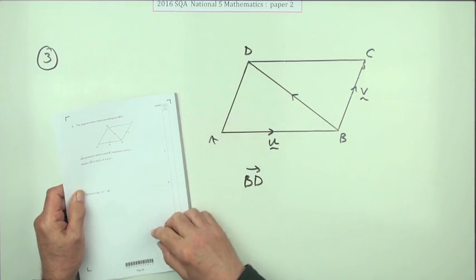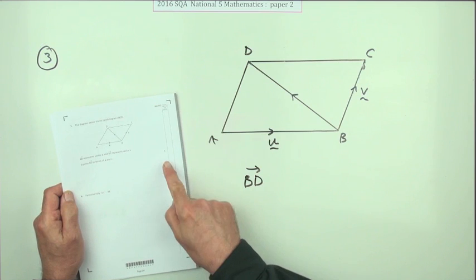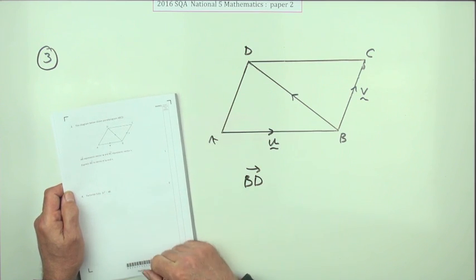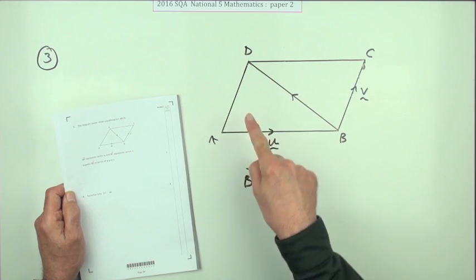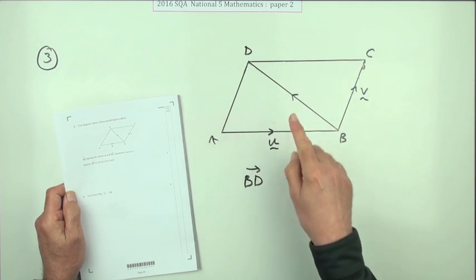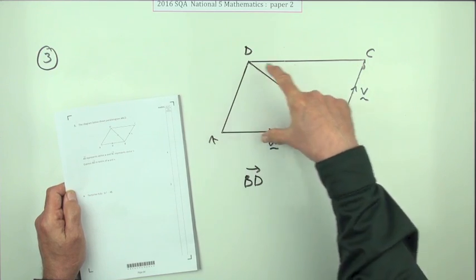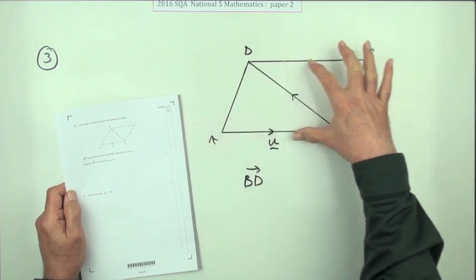Number three from paper two of the 2016 National 5, just a one-mark question on vectors. We've got this diagram here, a parallelogram. The important thing is opposite sides are parallel—they go in the same direction.